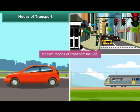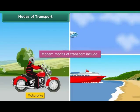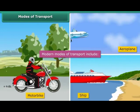As you can see, hence we now have cars, buses, roads, railways, motorbikes, aeroplanes, ships, etc. to travel.